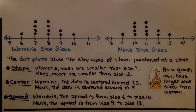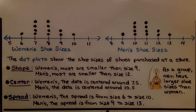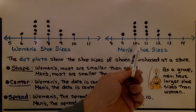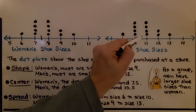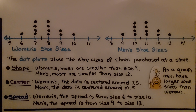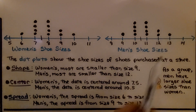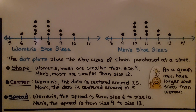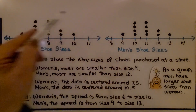Now we can compare these two dot plots: women's shoe sizes and men's shoe sizes. The dot plots show the shoe sizes of shoes purchased at a store. For the shape, women's sizes are mostly smaller than size 9, while for men's, most are smaller than size 12. For the center, the women's data is centered around 7.5, and the men's data is centered around 10.5. For the spread, women's ranges from size 6 to size 10, and men's ranges from size 9 to size 13. As a group, men have larger shoe sizes than women. Interestingly, both dot plots have the same shape even though the data values are different.